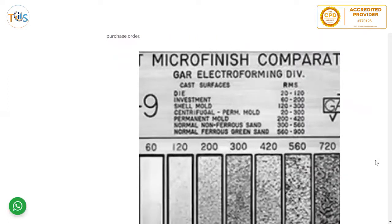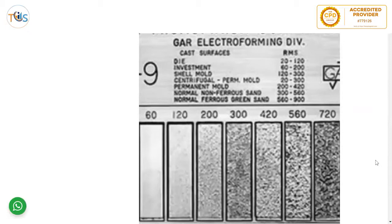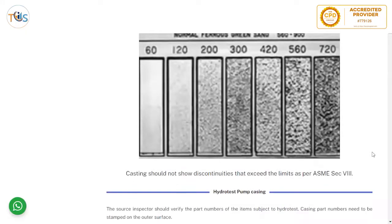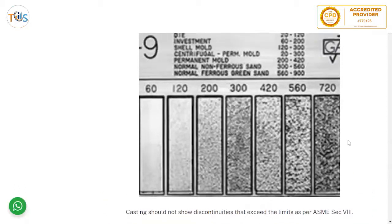The casting process should be capable of producing the surface finishes specified in engineering drawings or the purchase order. You select the comparator closest to the casting to show the surface finish. Castings should not show discontinuities that exceed the limits per ASME section 8, with roughness values of 600, 250, 100, etc.